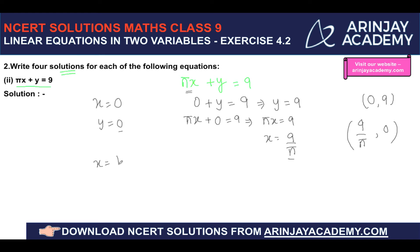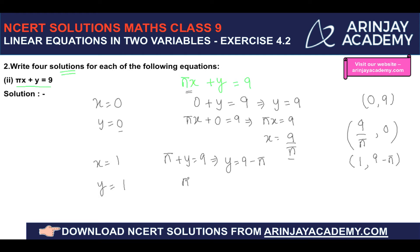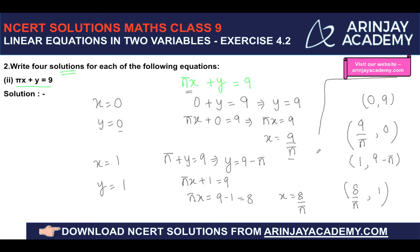Taking x equal to 1: π into 1 plus y equals 9, so y equals 9 minus π. Third solution: (1, 9−π). Taking y equal to 1: πx plus 1 equals 9, so πx equals 8, meaning x equals 8 upon π. Fourth solution: (8/π, 1). These four are the solutions for the equation πx plus y equals 9.